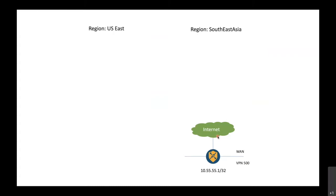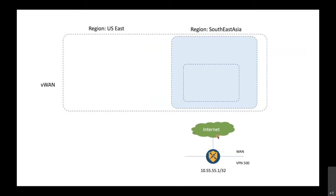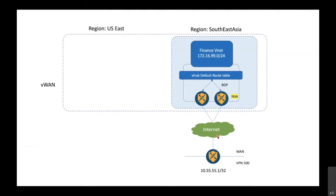The on-premise router sits at the branch in VPN 500 with a LAN IP address of 10.55.55.1/32. We have a virtual WAN and a virtual hub configured with a default routing table. We'll automatically spin up the network virtual appliance from the vManage controller, connect it to the virtual hub on Azure, use BGP to exchange routes between the NVA and the default route table, and finally attach the virtual network 172.16.99.0 to the virtual hub for full branch-to-WAN connectivity.